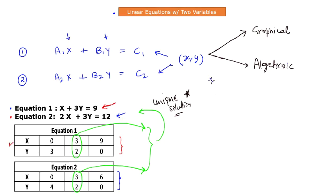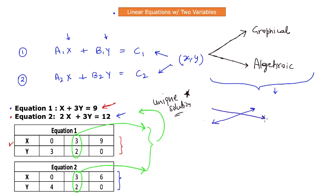Whether you choose the graphical method or the algebraic method, you are always going to land into one of three options for the solution of your system of linear equations. The first case could be that your pair of equations, when plotted, are found to be intersecting at some point. That point wherever they intersect is the solution to that system of linear equations, meaning there is a case of a unique solution.